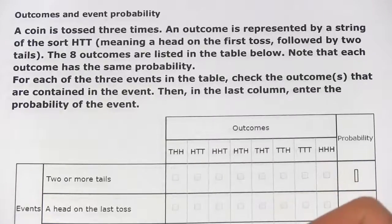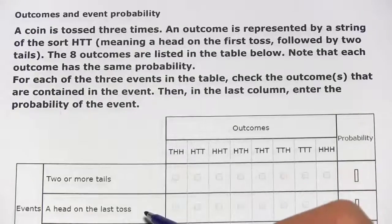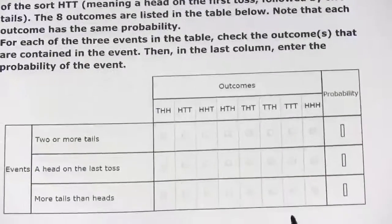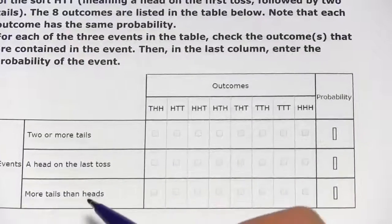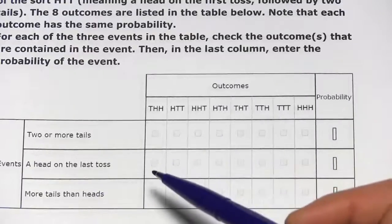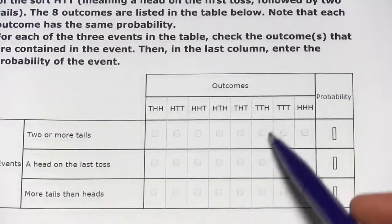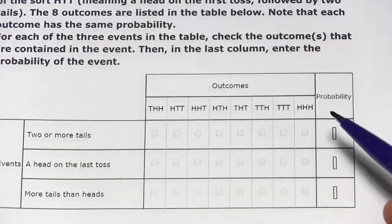Now, there are some specific events here that we want to determine the probability of, like two or more tails, or a head on the last toss, or more tails than heads. To do this, if we have all the possible outcomes, we just have to count the outcomes that satisfy those conditions and then divide by the total number of outcomes, and that should be the probability.